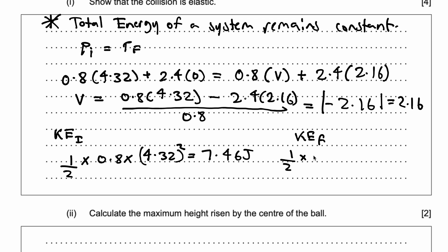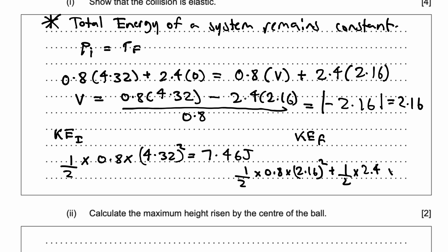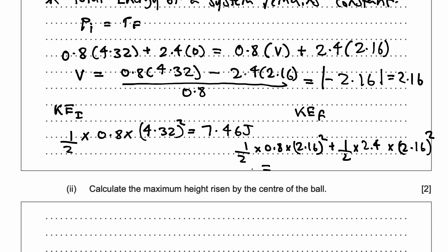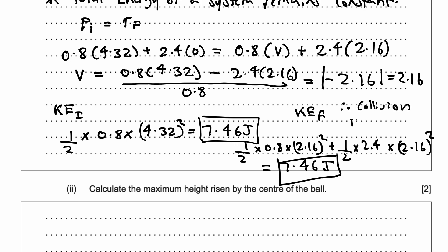Kinetic energy final becomes half times 0.8 times 2.16 squared, plus the kinetic energy of the block: half times 2.4 into 2.16 squared. Putting this into the calculator: 0.4 times 2.16 squared, plus 1.2 times 2.16 squared. I get kinetic energy final is also equal to 7.46 joules. The kinetic energy of the system remains the same before and after the collision. Hence, the collision is elastic.